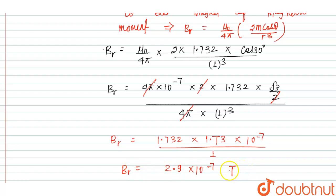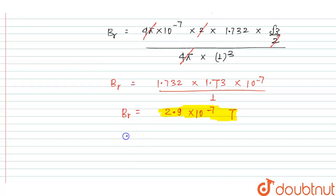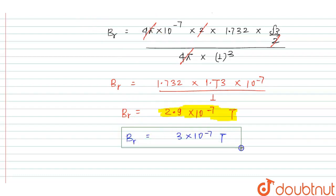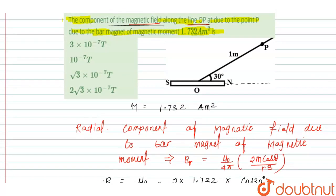The unit of the magnetic field is Tesla. This is the right answer of this question: 2.9 into 10 to the power minus 7 Tesla, which is approximately equal to 3 into 10 to the power minus 7 Tesla. The magnetic field along the radial direction is equal to 3 into 10 to the power minus 7 Tesla. When we see the options, the answer is option A: 3 into 10 to the power minus 7 Tesla. This is the right answer. Thank you.